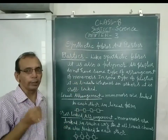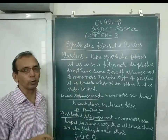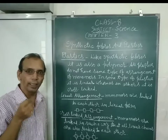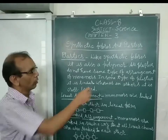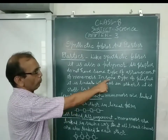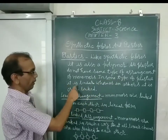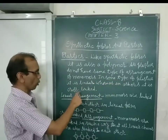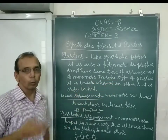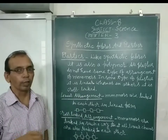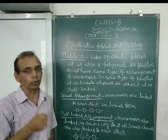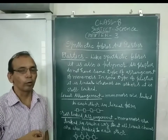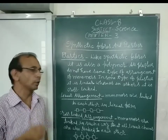All plastics are made up of the same type of polymers formed from monomers. In some types of plastics, the monomers are arranged in a linear form. In other types of plastics, the monomers are cross-linked.